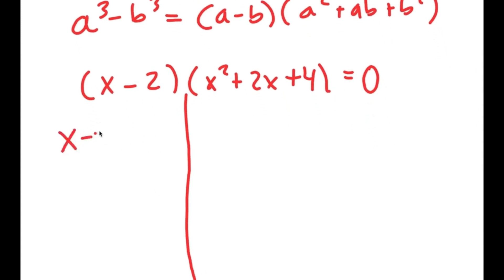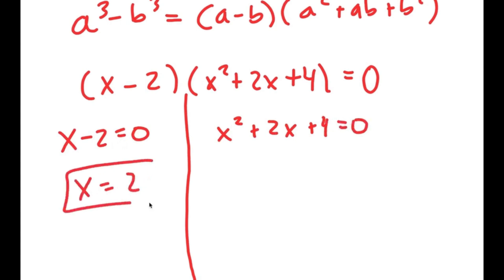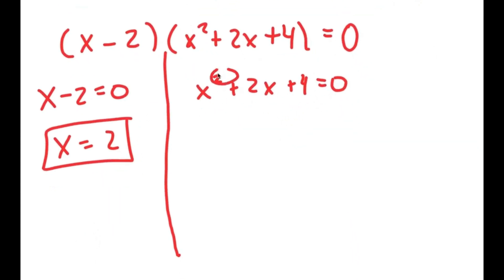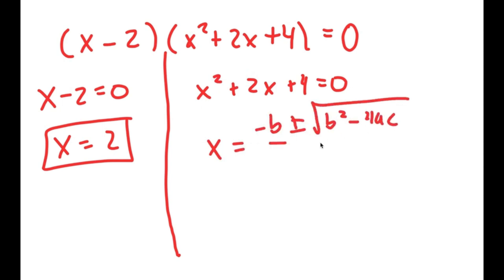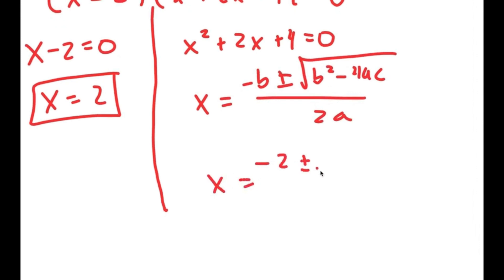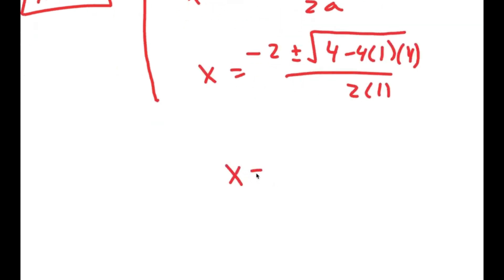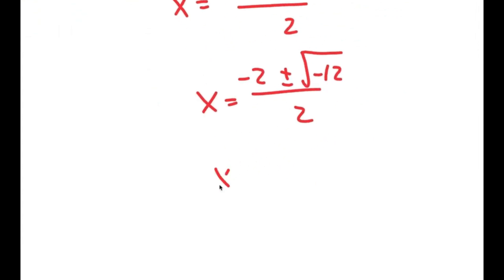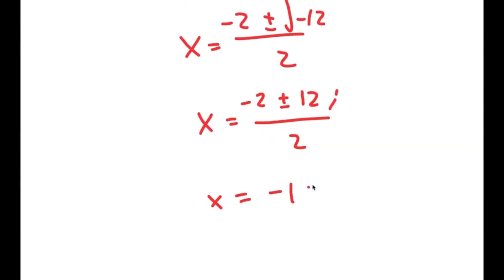Now I get two equations: x minus 2 equals 0, and x² plus 2x plus 4 equals 0. From the first, x equals 2, which we already found. The second is a quadratic, giving two more solutions. Using the quadratic formula: negative 2 plus or minus the square root of (4 minus 16) over 2, which equals negative 2 plus or minus the square root of negative 12 over 2, which simplifies to negative 1 plus or minus i times the square root of 3. These are two more complex solutions.